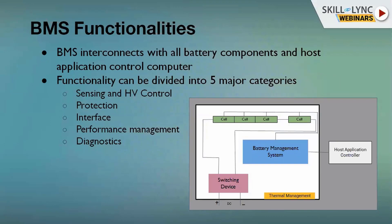The first category is sensing and HV control. Sensing involves monitoring each single battery cell, including current and voltage, and also the control of the HV contactors. The second category is protection — all the protection mechanisms that have to be included to operate the cells in a safe zone. The third is the interface, which comes into picture when you have different modules and need to communicate battery status or battery limits to external control units. The fourth is performance management and the fifth is diagnostics.